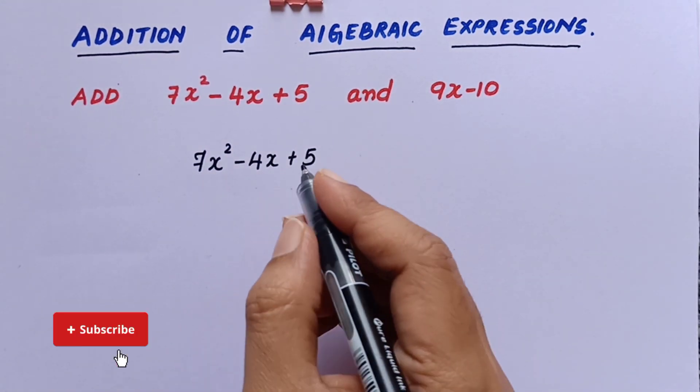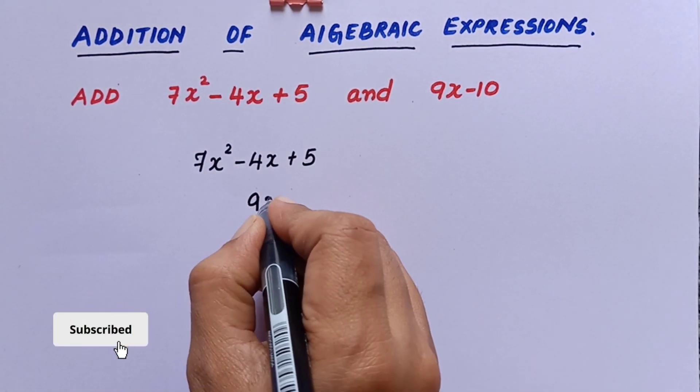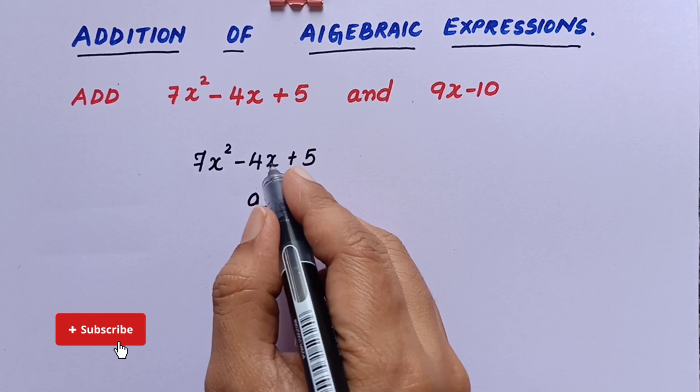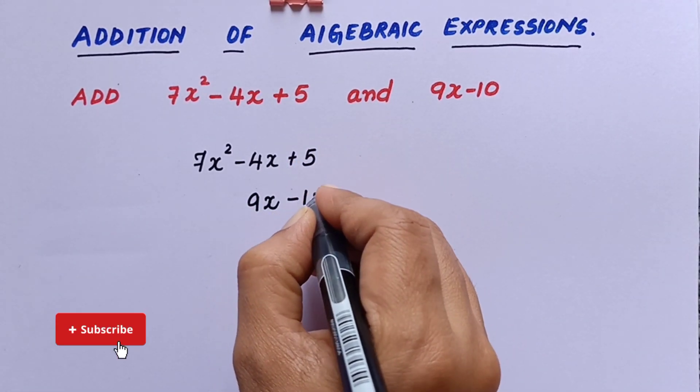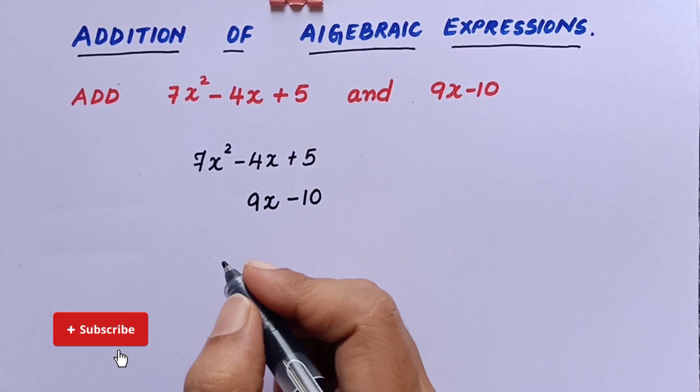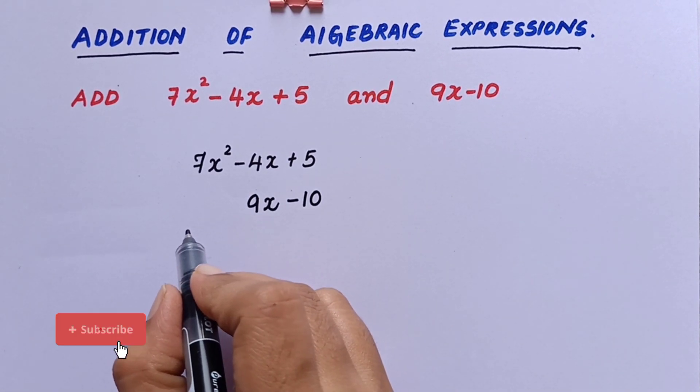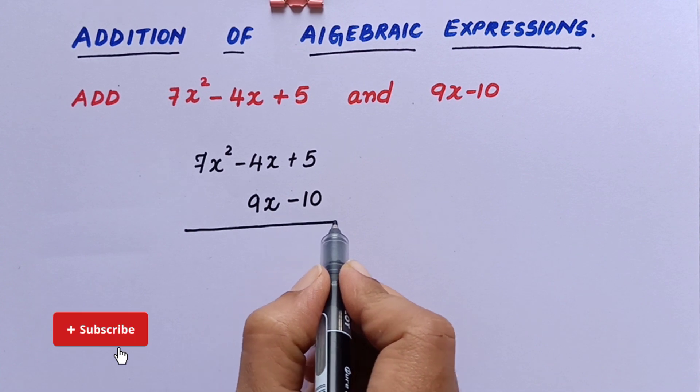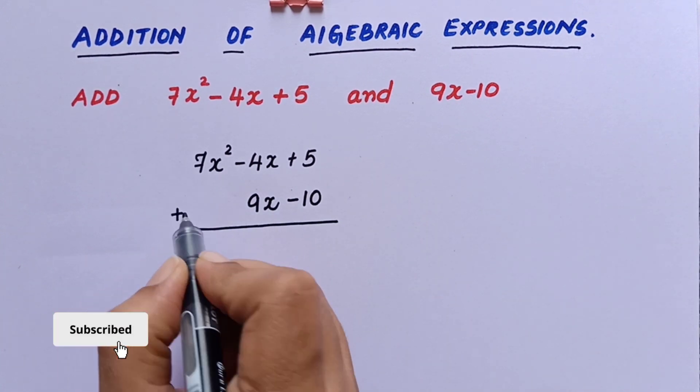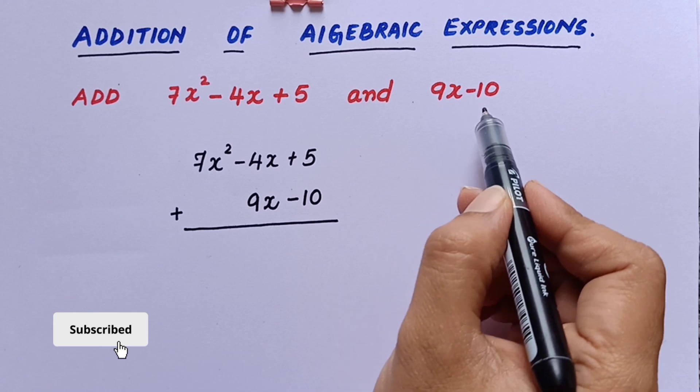So here we'll have to write 9x below -4x because these two are the like terms, and below 5 we'll have to write -10 because these two are like terms here. So writing like terms one below the other will help us to add these two expressions.